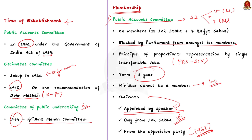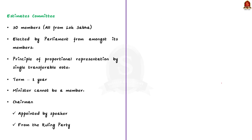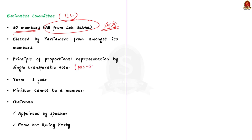The Estimate Committee, EC, has 30 members and all 30 members should be from the Lok Sabha — the Rajya Sabha has no representation in the Estimate Committee. Members are selected according to the proportional representation system by single transferable vote. The term of office is one year. Like PAC, a Minister cannot be a member of EC. The Chairman of the Estimate Committee is appointed by the Speaker from among its members, and the Chairman will be from the ruling party.